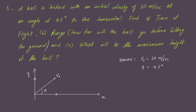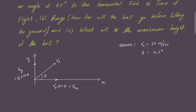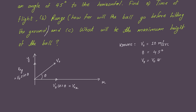From the initial velocity and angle, we can figure out the X and Y components. Projectile motion is a combination of two one-dimensional motions — one in X and one in Y. We break down the initial velocity: V₀ₓ = V₀cosθ = 10cos45°, and V₀ᵧ = V₀sinθ = 10sin45°.